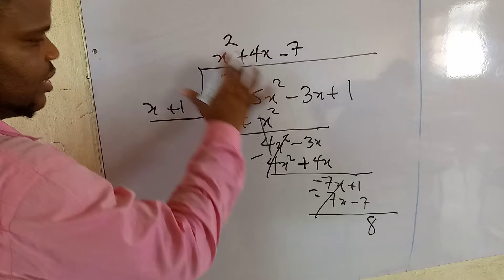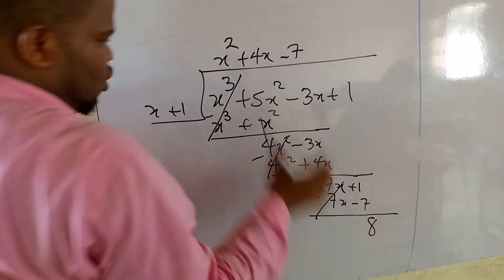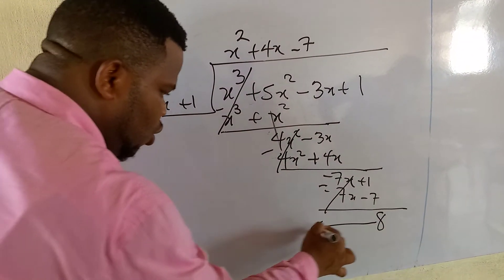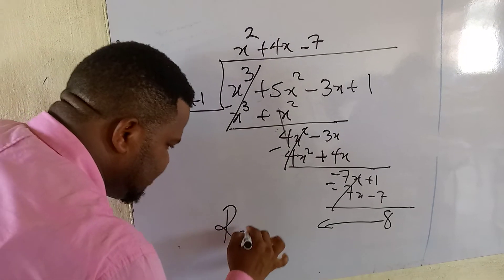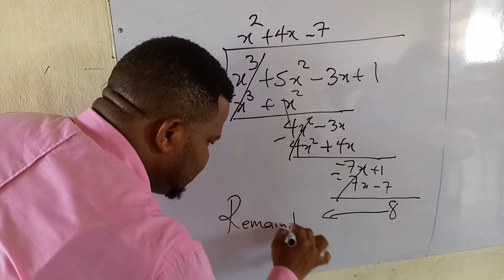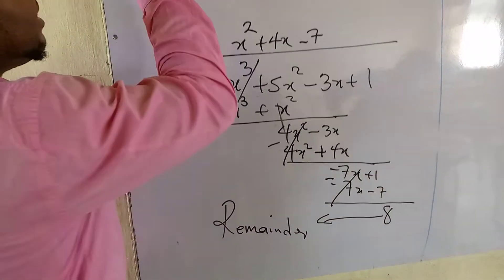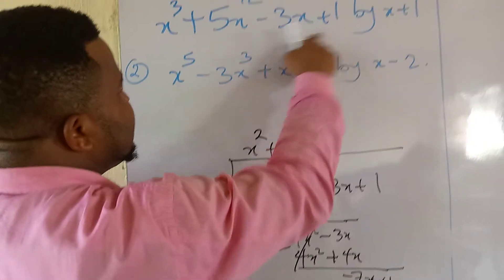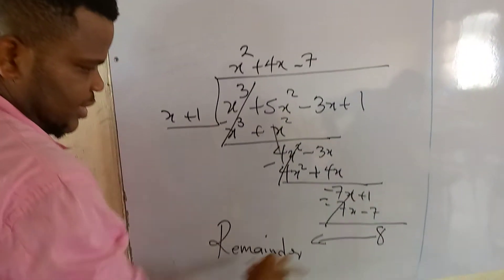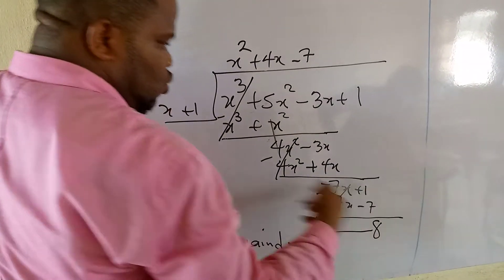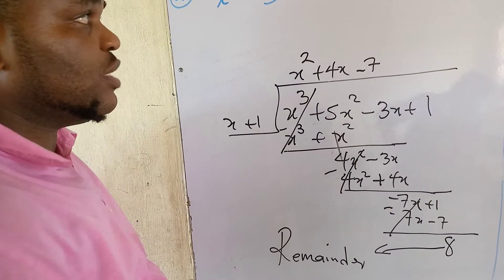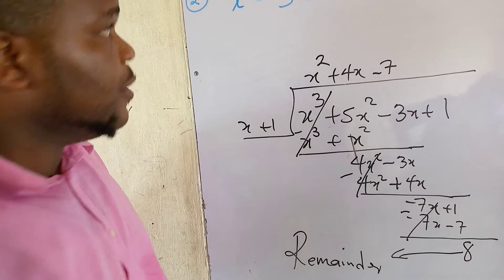After applying the minus sign, the minus 7x cancels out. Minus times minus is plus, so we get 1 plus 7, which gives 8 as the remainder. So the remainder when dividing this polynomial by x plus 1 is 8. We could also use the remainder theorem to verify this, but that is not the focus of this video.